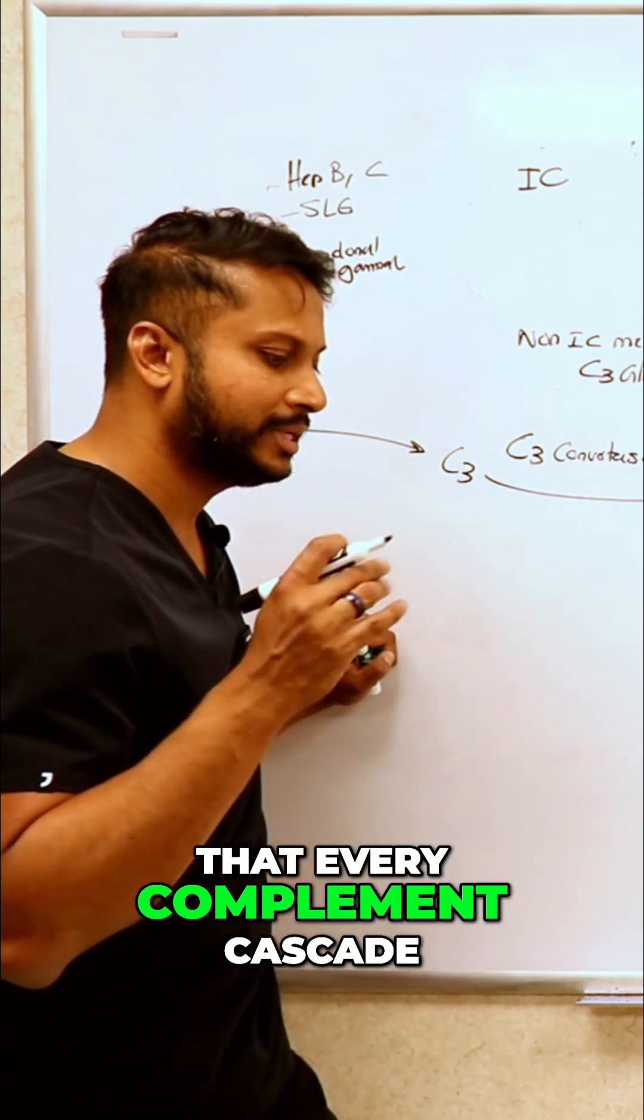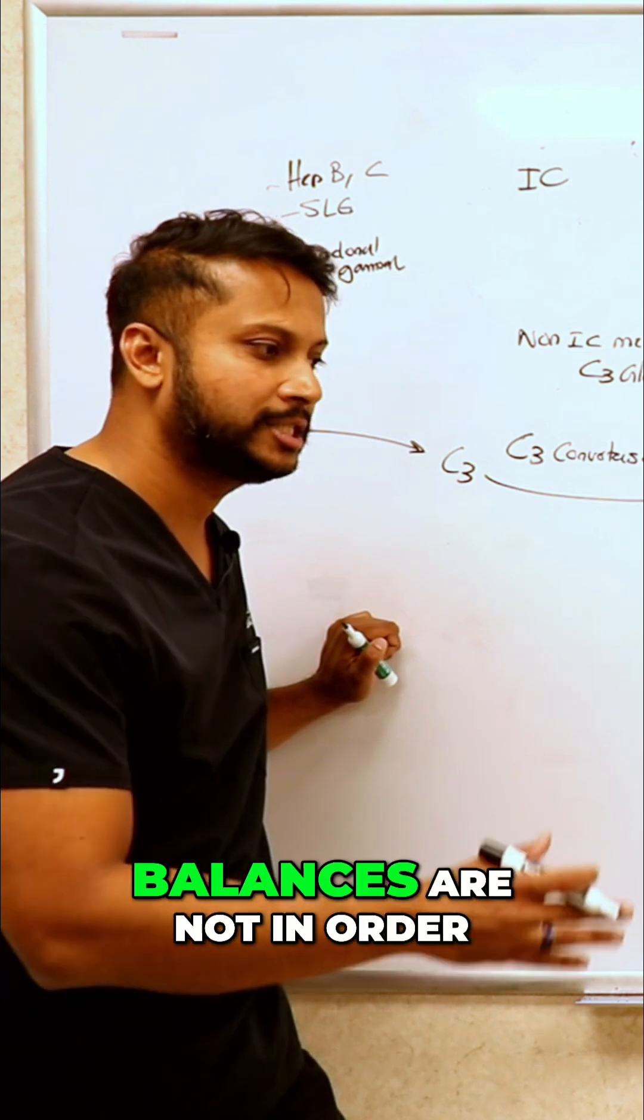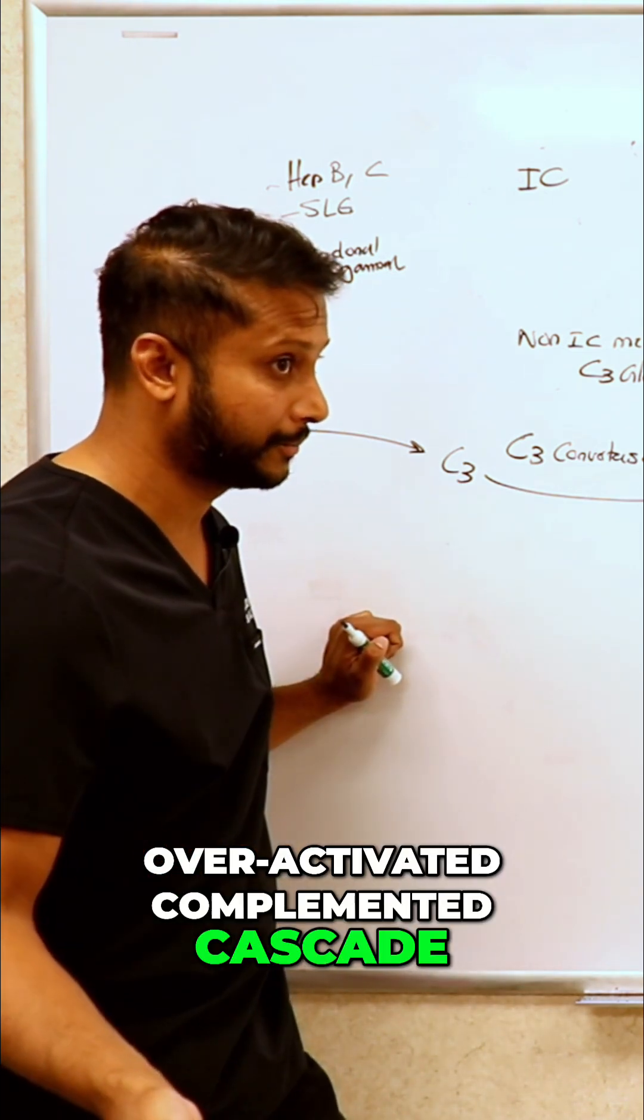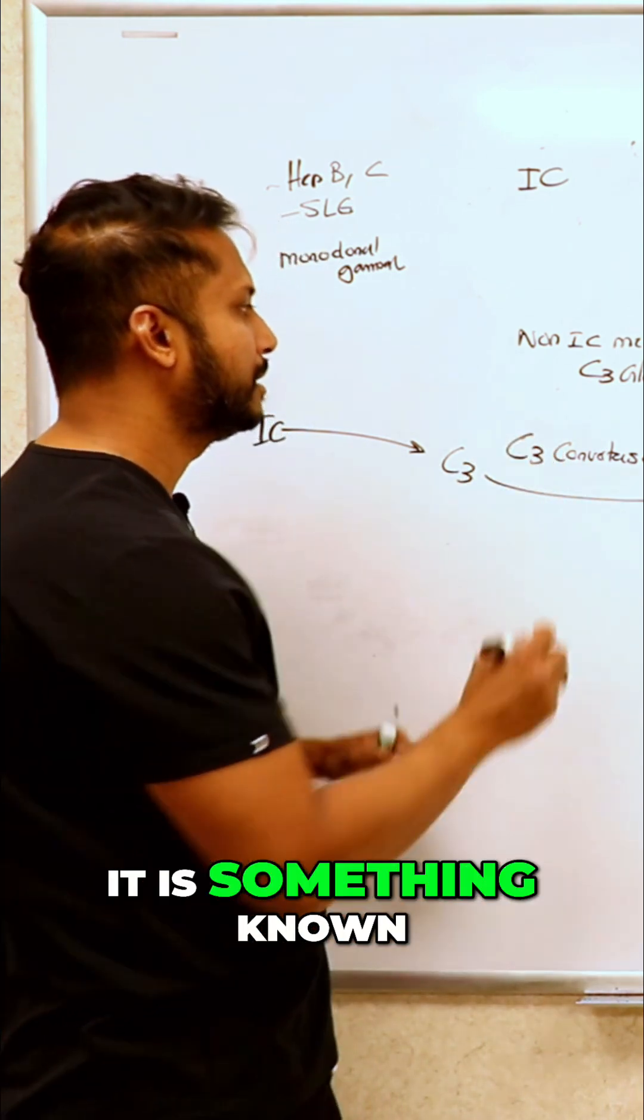You need to understand that every complement cascade needs to have checkpoints. If your checks and balances are not in order, you'll have an overactivated complement cascade. So what blocks your C3 converters? It is something known as factor H.